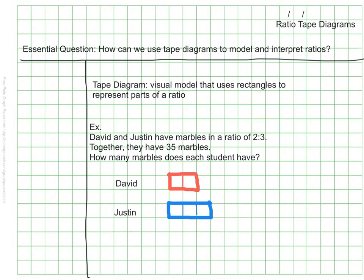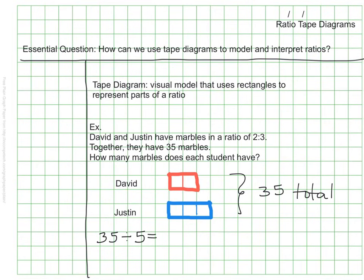I've modeled the portions of marbles for both David and Justin, and I was careful that the rectangles are uniform in size and are lined up on the left-hand side — that's going to make it easier to see what I'm looking for. On the right-hand side I've also recorded that there are a total of 35 marbles. It's clearly visible now that the students together have five rectangles worth of marbles and the total number of marbles is 35. If I take my 35 total marbles and divide by the five rectangles, I know that each one of these squares is going to represent seven marbles.